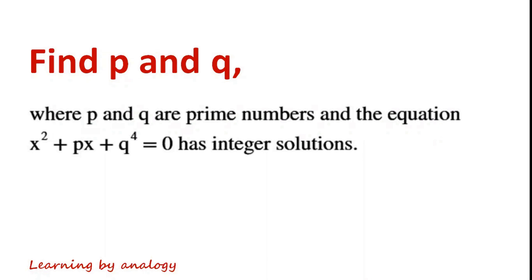Find p and q where p and q are prime numbers and the equation x squared plus px plus q to the power of 4 equals 0 has integer solutions.